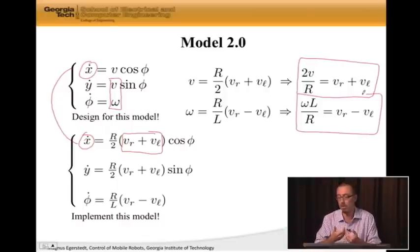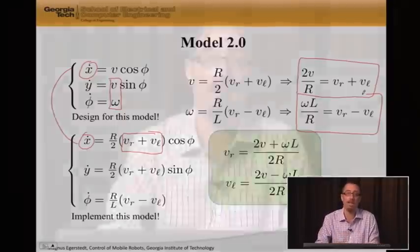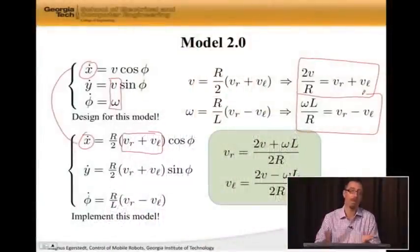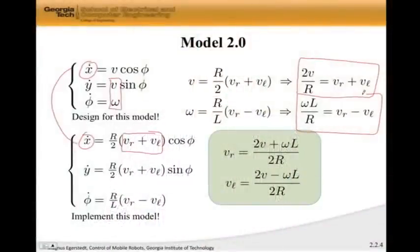Now, these are just two linear equations. We can actually solve these explicitly for V sub R and V sub L. And if we do that, we get that V sub R is this thing and V sub L is this other thing.